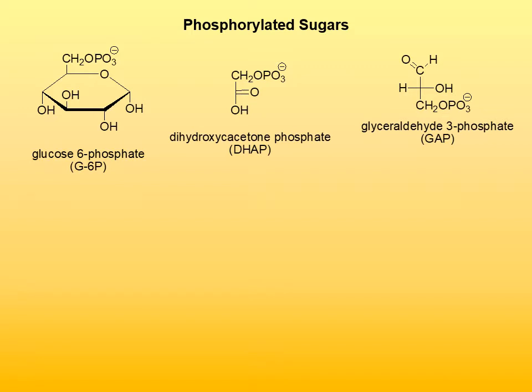Phosphorylated sugars are very important reactive intermediates. They are high-energy compounds and they are involved in metabolism. Phosphorylated sugars are generated as a result of burning of various fuels, usually other carbohydrates and lipids, to give phosphorylated sugars, which are high-energy compounds, and those are then converted further in metabolism into ATP.